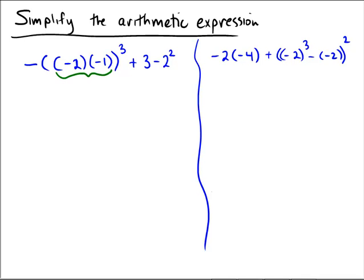So first I'm going to perform the negative 2 times the negative 1, which would be positive 2. So I have a negative sign out in front, a 2 in here being cubed, plus 3 minus 2 squared.